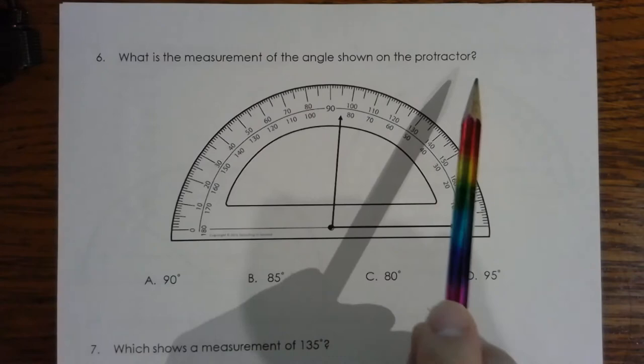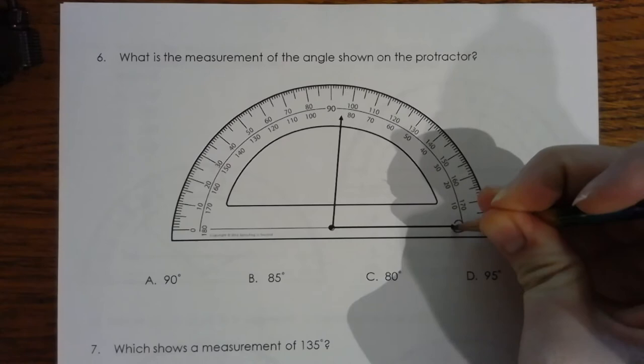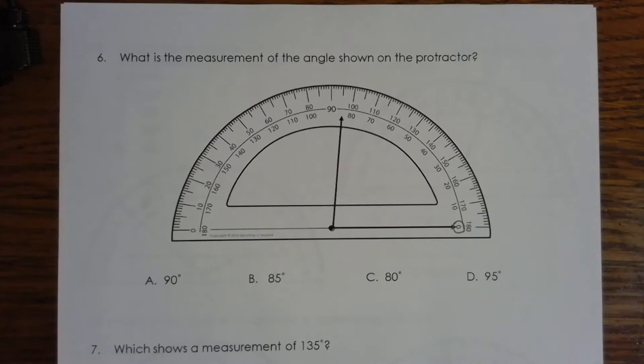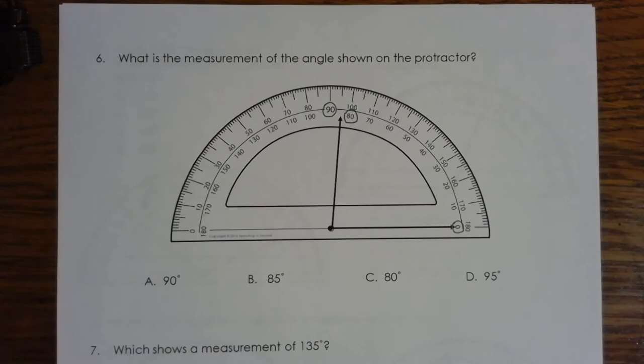We are simply just looking for the measurement and we notice right away that one of these rays is pointed right at zero. So this is telling us that we're going to use the inner set of numbers in the protractor. I would go ahead and circle that zero so I don't mix it up. Then I want to figure out next what two numbers is this second ray pointing between. So if we're using the inner set, I would want to circle 80 and 90.